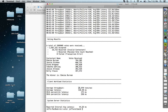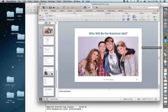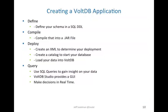An average of 25,000 transactions per second — that's just crazy. To recap what we did: we defined our schema in a SQL DDL, compiled that into a JAR file, deployed it into VoltDB, and then queried our database to gain real-time insight — all with the power of VoltDB. That's all for my presentation; thanks for listening.